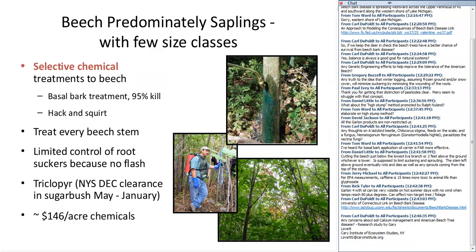For selective chemical treatment of sapling-sized trees, this is what's called basal bark treatment. Or you can do hack and squirt if you have slightly larger sapling-sized trees. These are going to have very high kill rates on the stems that are treated. There's going to be limited control of suckers because of limited flash — in fact, basal bark treatments are going to have no flash. The hack and squirt may have a little bit of flash. Triclopyr is what's used for treatment through basal bark.